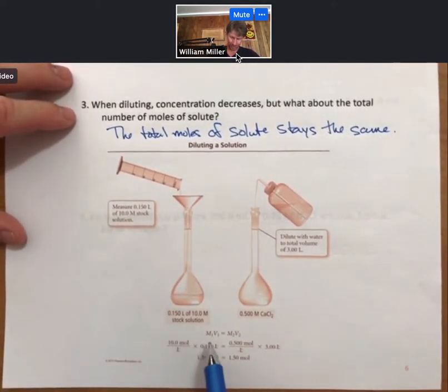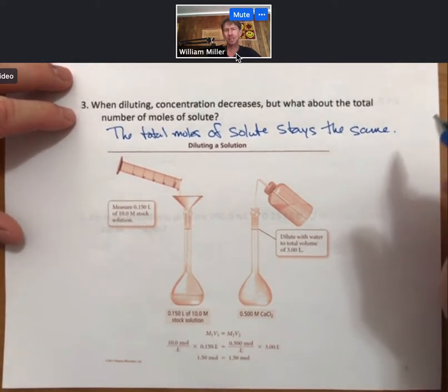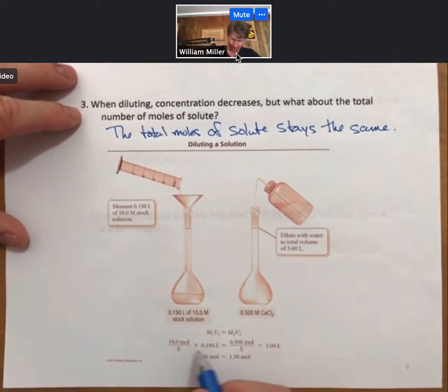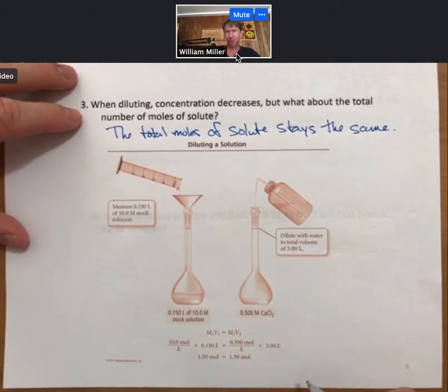And if we do the M1 times the V1, since molarity is moles per liter and volume is liters, so you can cancel units to show that the leftover units are moles on the left side and moles on the right side. And you can further show, just as in this picture, that the moles are the same.